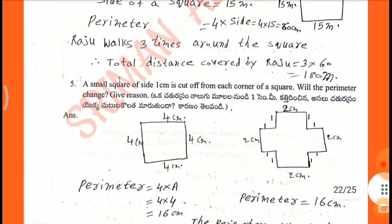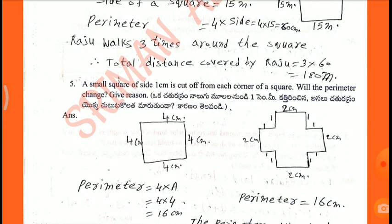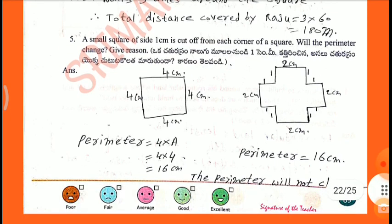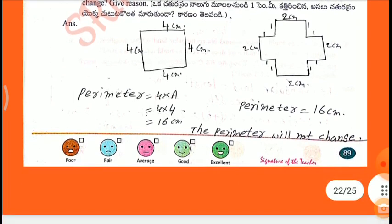Fifth: a small square of side 1 cm is cut off from each corner of a square of side 4 cm. Will the perimeter change? Perimeter of original square equals 4 into 4 equals 16 cm. After cutting the corners, the perimeter is still 16 cm. The perimeter does not change — both figures have the same perimeter.